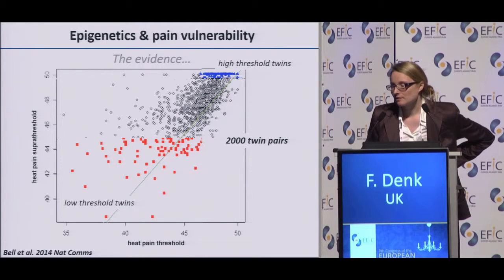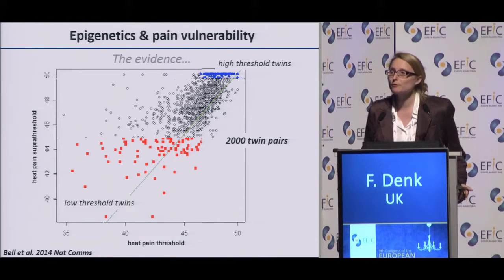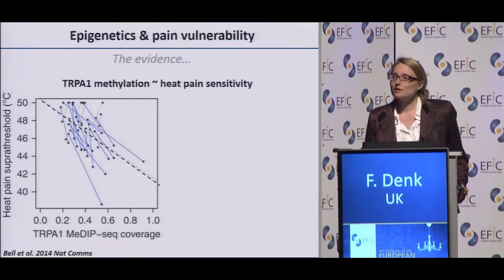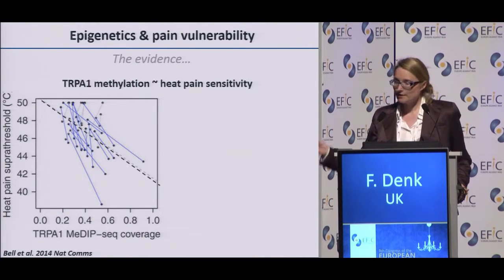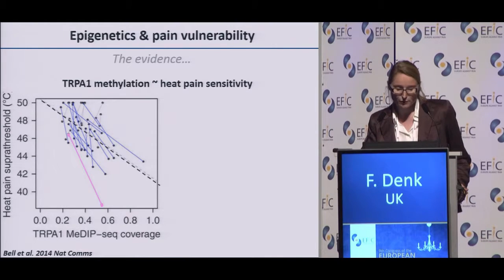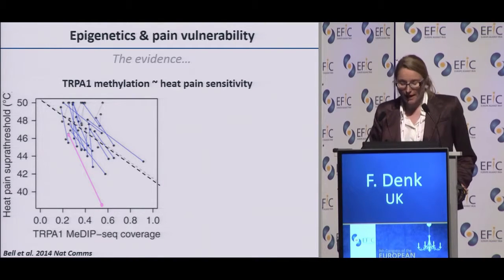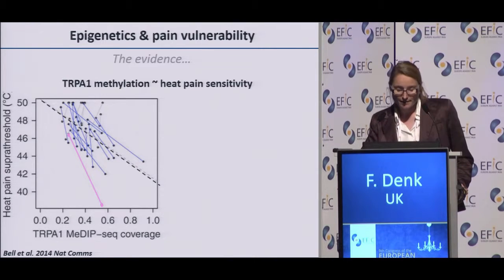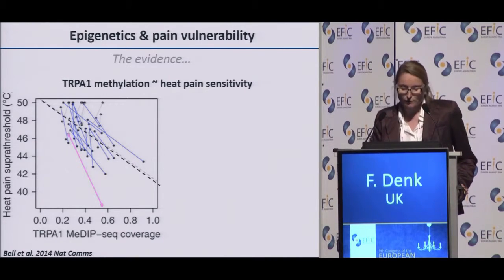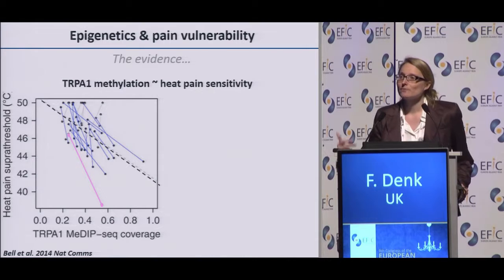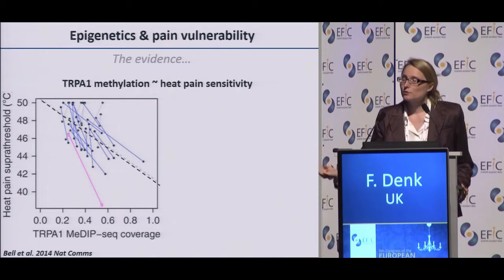Jordana performed genome-wide DNA methylation analysis, and indeed she found that methylation at a specific gene — the TRPM1 gene that David already mentioned — was inversely correlated with heat pain sensitivity. For instance, you have one twin with a high heat pain threshold and low DNA methylation, and her sister with a low heat pain threshold and high DNA methylation. This was really the first evidence that the state of our epigenome is related to how we perceive pain.